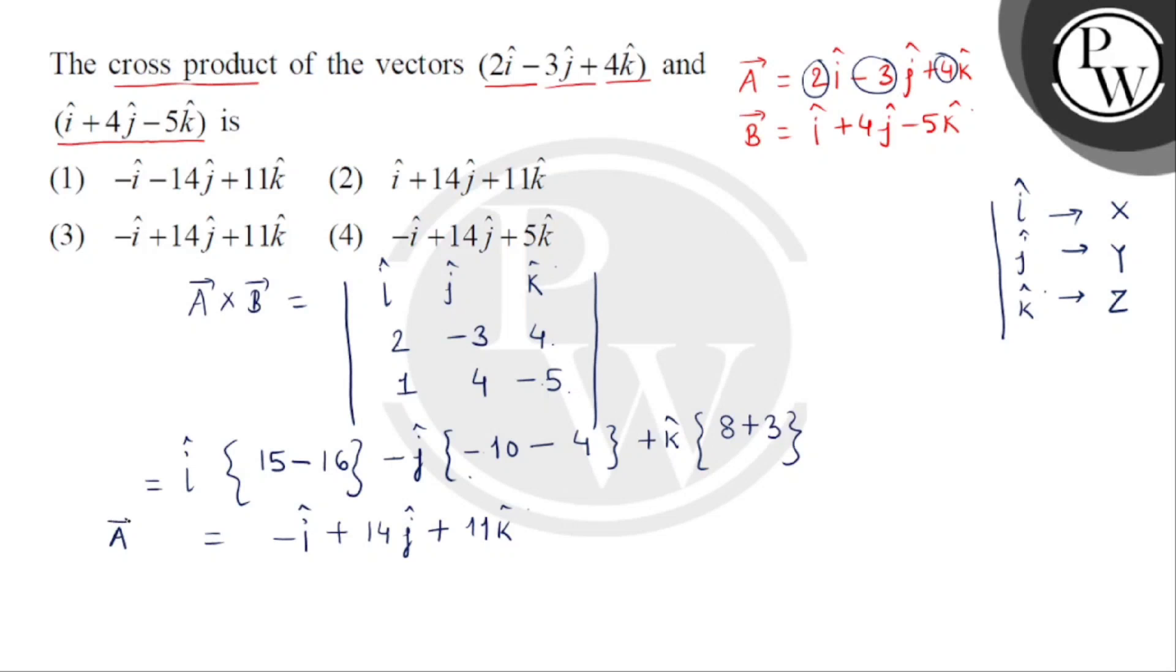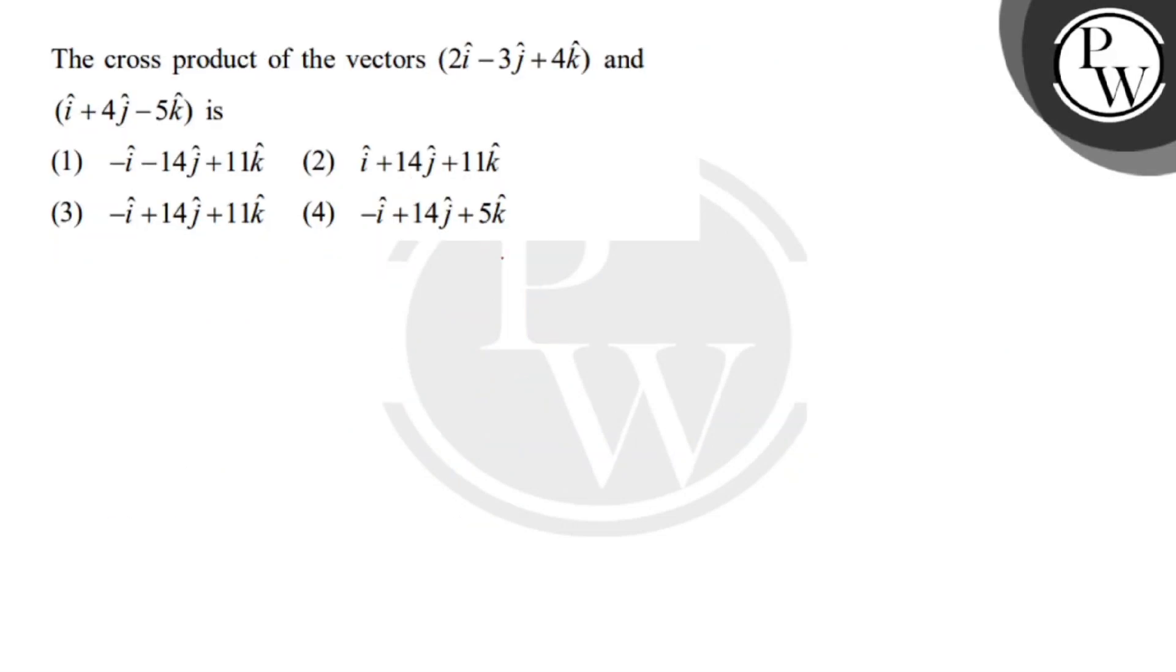तो यह मिल गया हमें a vector cross b vector. So इस question का right answer हुजाएगा option number 3. Thank you.